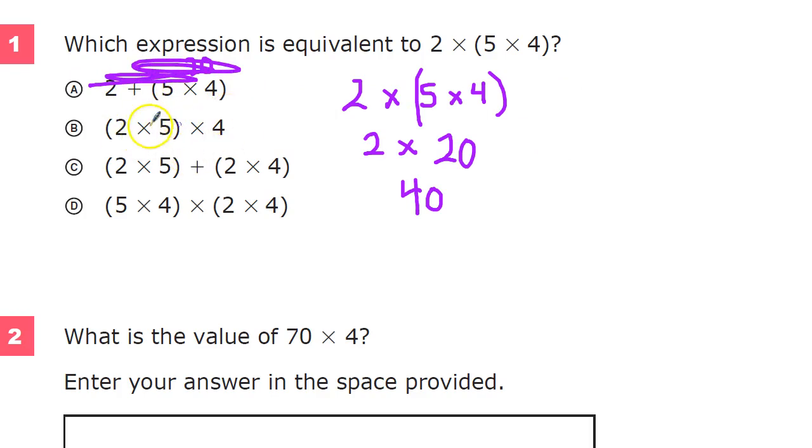But this next one, it's like a shining star. Maybe it can help us. So 2 times 5 times 4. You'll notice the numbers are in the same order. It's just where the grouping has changed. 2 times 5 is 10, of course. 10 times 4 is 40. So that's pretty good. I'm going to choose that one.